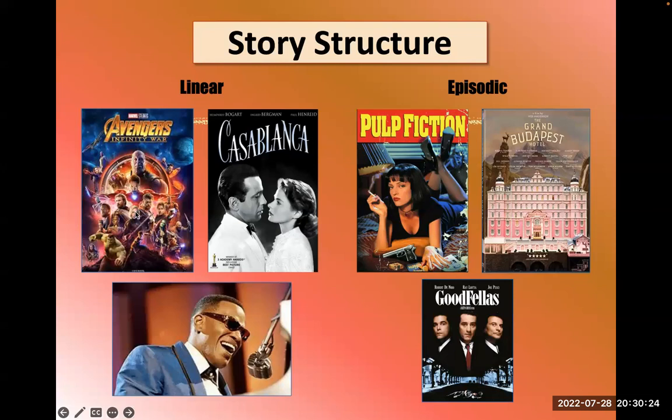For linear examples: Infinity War is mostly linear, events happen one after the other. Casablanca is linear — there's a flashback in it but still linear. Ray, the biopic about Ray Charles, is also linear — biopics almost always start at the beginning of the character's life and go to the end.